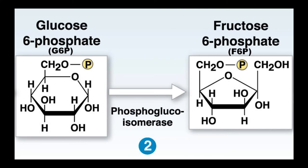In step two, we have our glucose-6-phosphate and we're going to convert it to a molecule called fructose-6-phosphate, abbreviated F6P. This reaction occurs with the help of the enzyme phosphoglucoisomerase. This is an isomerizing reaction where the enzyme does a rearrangement of the sugar molecule, converting it from a glucose molecule into a fructose sugar.